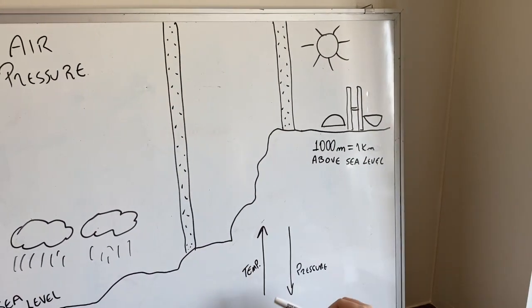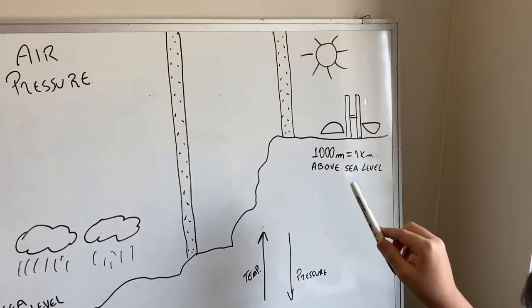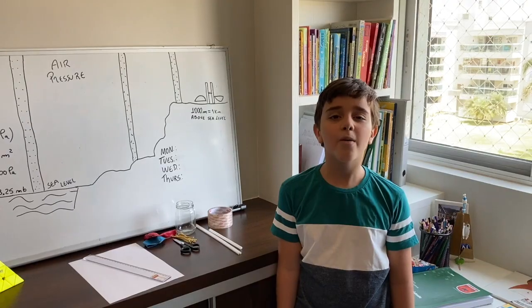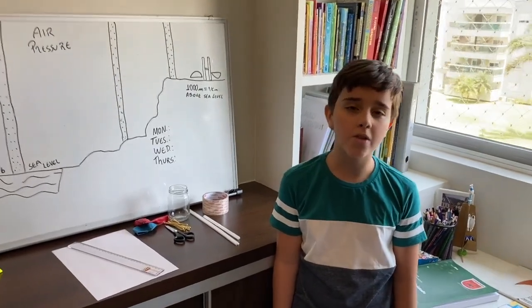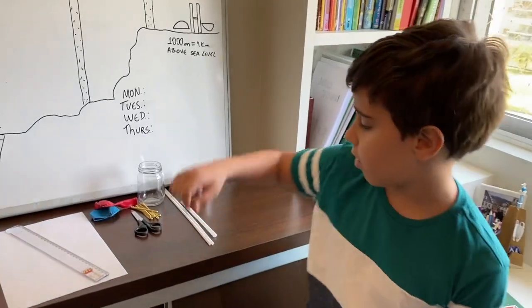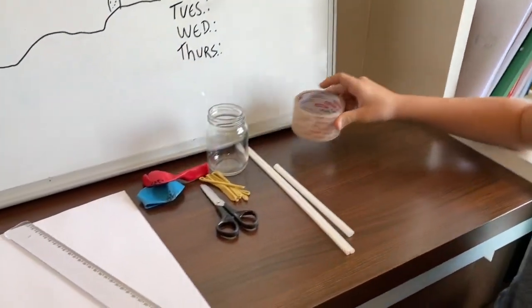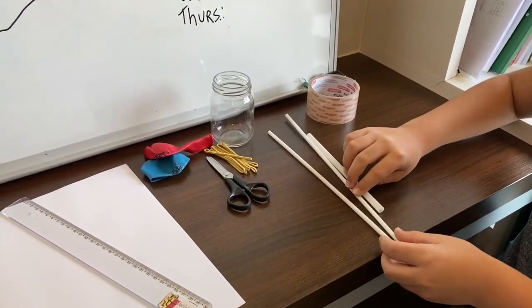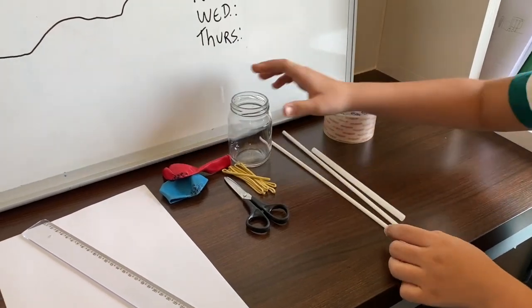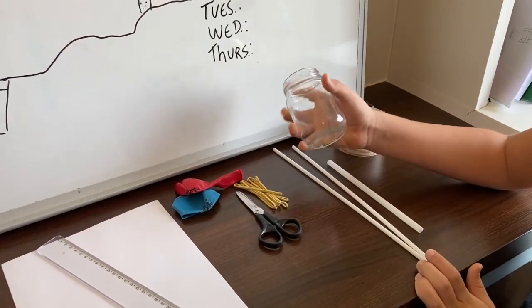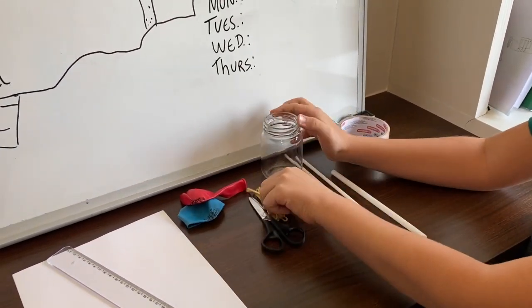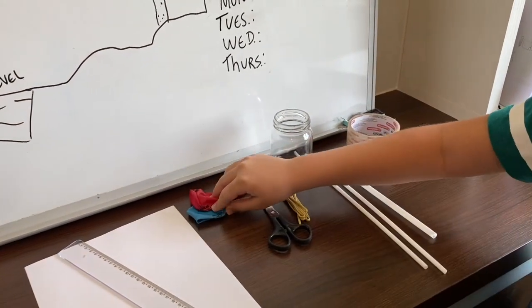And on Brasilia it is the exact opposite because the temperature is high, so the pressure is low. Now we're going to build our homemade barometer. The materials we're going to need are tape, straws but just one, a glass jar, some rubber bands, and one balloon.